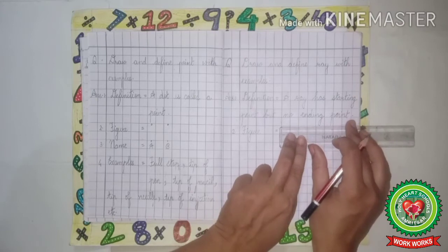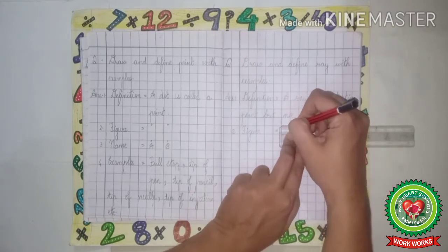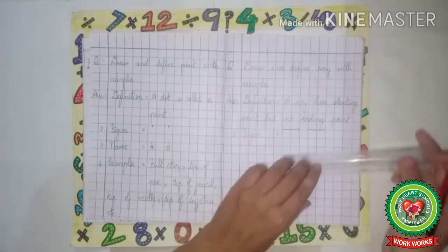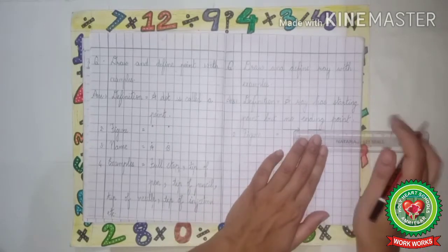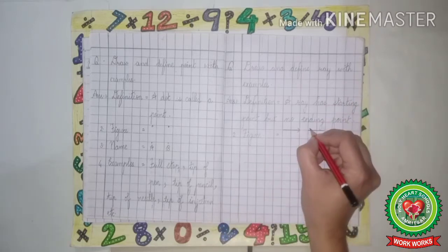Like this. And an arrow on one side. Now again we will draw a line and arrow on one side.